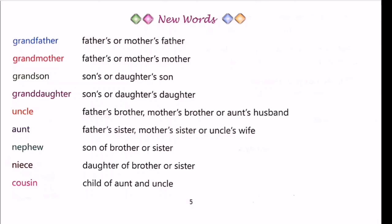Now we will discuss the meaning of some new words. Grandfather means your father's or mother's father. Grandmother means father's or mother's mother. Grandson means son's or daughter's son. Granddaughter means son's or daughter's daughter. Uncle means father's brother, mother's brother, or aunt's husband. Aunt means father's sister, mother's sister, or uncle's wife. Nephew means son of a brother or sister. Niece means daughter of a brother or sister. Cousin means child of an aunt and uncle.